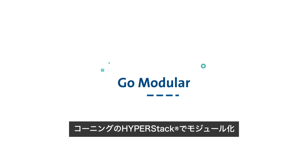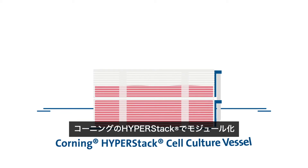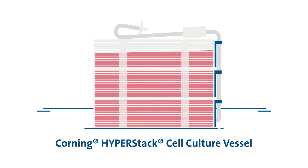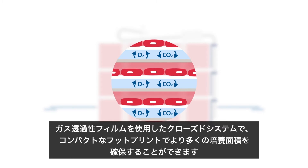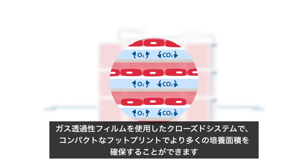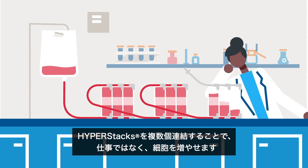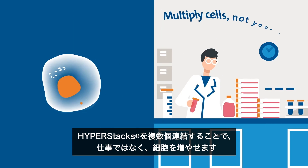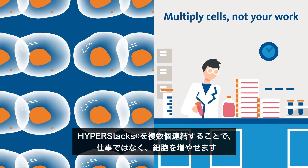Go modular with the Corning HyperStack. With gas permeable film, this closed system offers more surface area within a compact footprint. You can manifold HyperStacks together, multiplying cells — not your work.